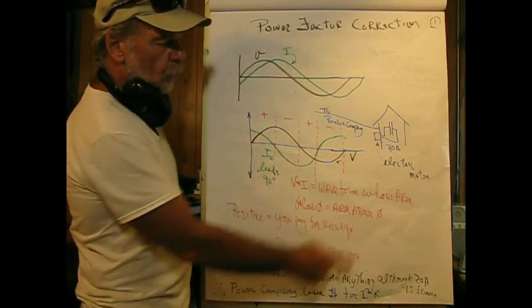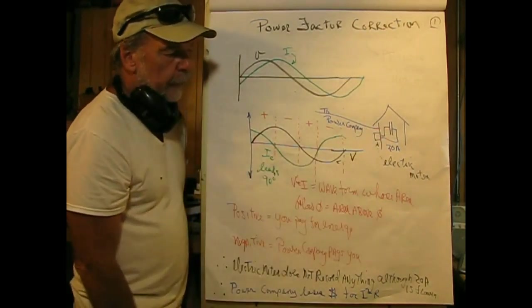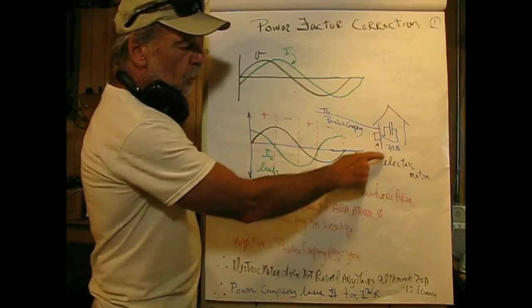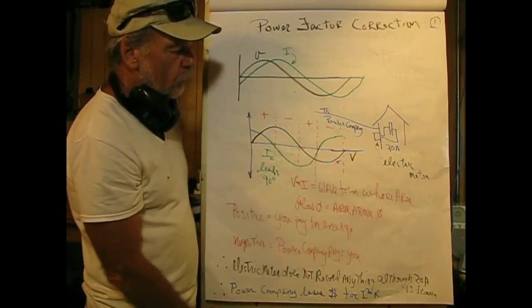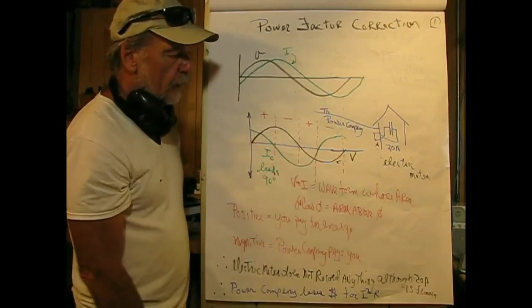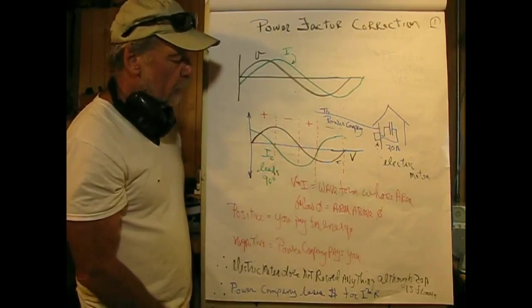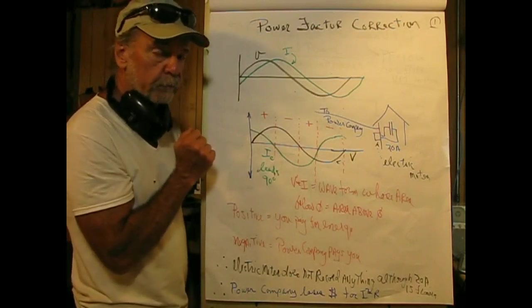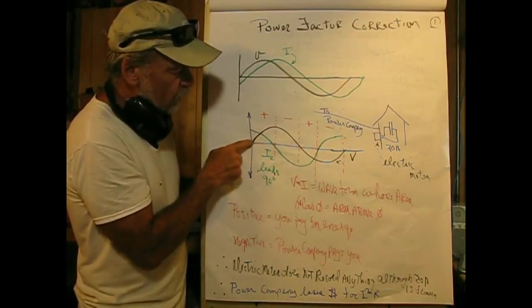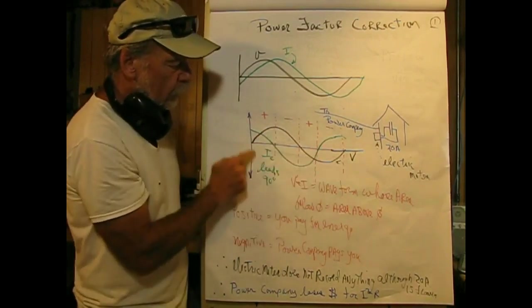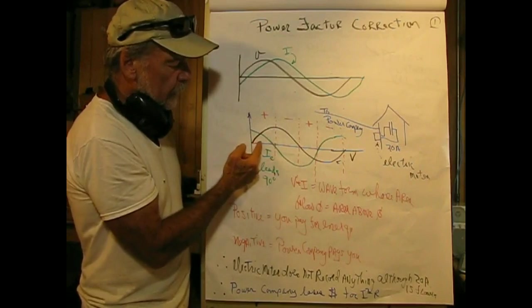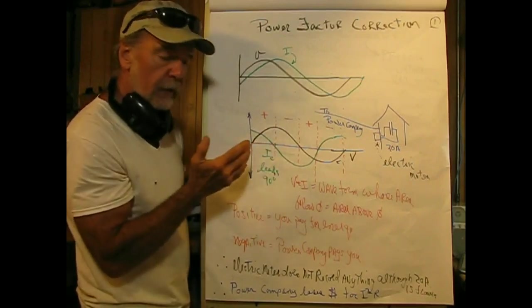For example, suppose in your house you have a perfect capacitor with no resistance, and the value is such that you're drawing 20 amperes from 120 volts. What we know about capacitors is that the current is going to lead the voltage by 90 degrees.